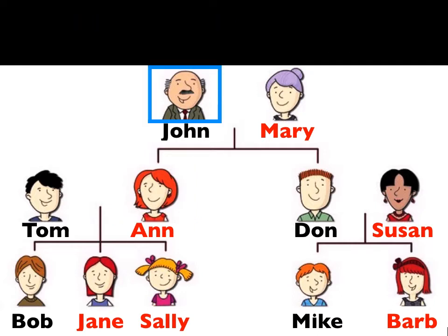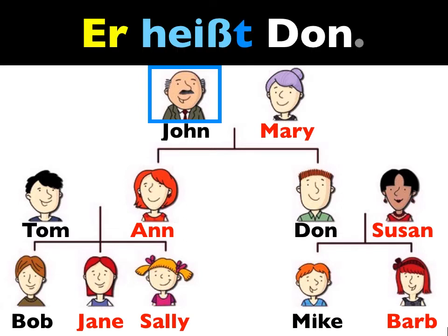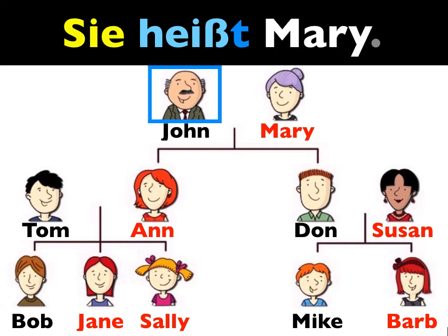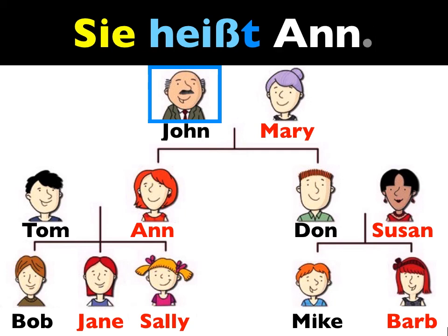And now let's presume you are this person. Answer the question: wie heißt dein Sohn? Er heißt Don. Wie heißt deine Frau? — Nope. Wie heißt deine Frau? She is female, so: sie heißt Anne. Good job.